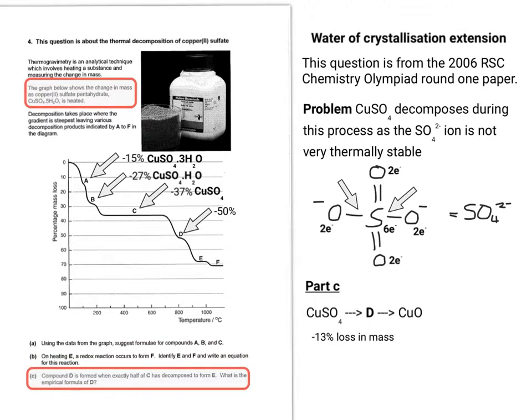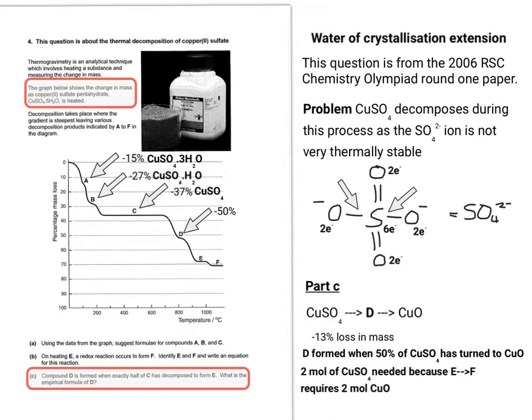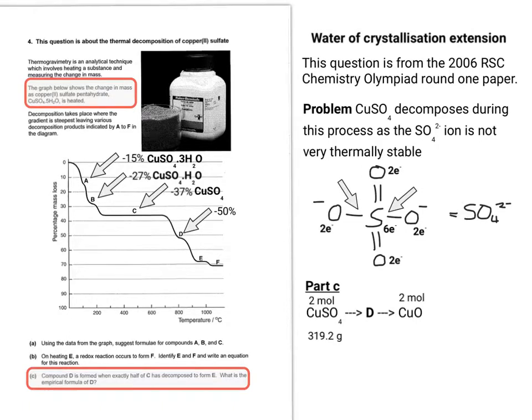Now the next question is quite hard. So let's look at this process we're talking about. We're talking about CuSO4 going to D and going to CuO. So the question tells us that D is formed when exactly half of the original copper sulfate, CuSO4, has turned to CuO. So from earlier in the question, we knew that two moles of copper oxide were needed, CuO. So therefore, if there's two moles of CuO produced, there's two moles of CuSO4. So two moles of copper sulfate is 319.2 grams. So if you remove 50% of that, that now means there's 159.6 grams left.